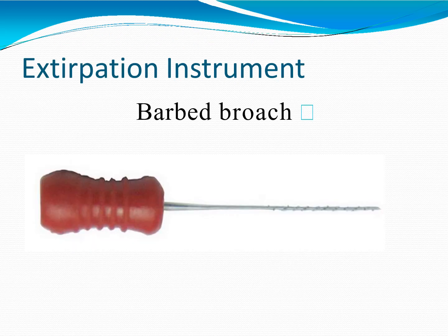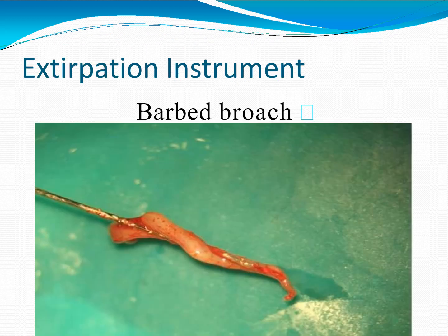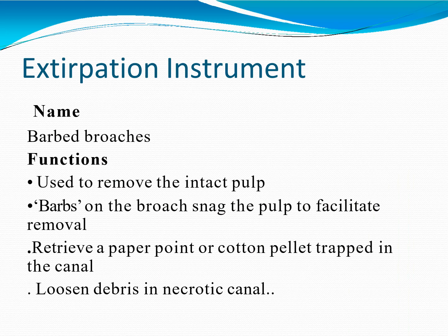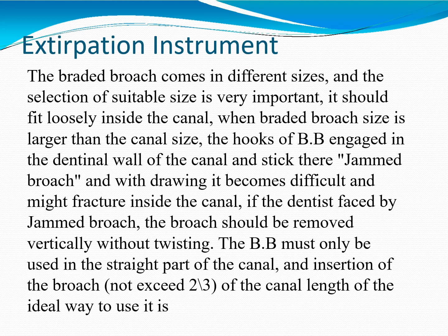The barbed broach is an extirpation instrument used to remove the intact pulp — it should fit loosely inside the canal. The barbs on the broach snag the pulp to facilitate removal. It can also retrieve a paper point or cotton pellet trapped in the canal, and loosen debris in a necrotic canal. The barbed broach comes in different sizes and selection of a suitable size is very important.